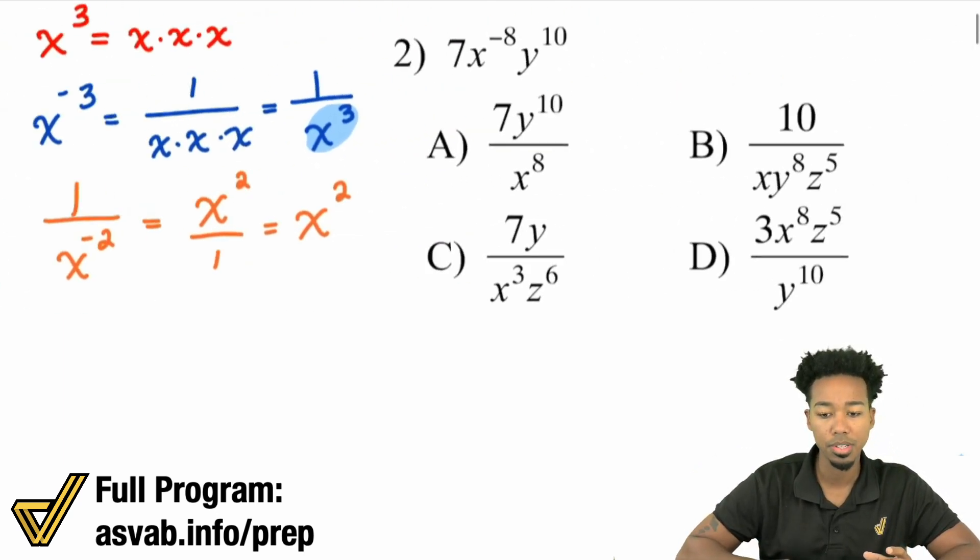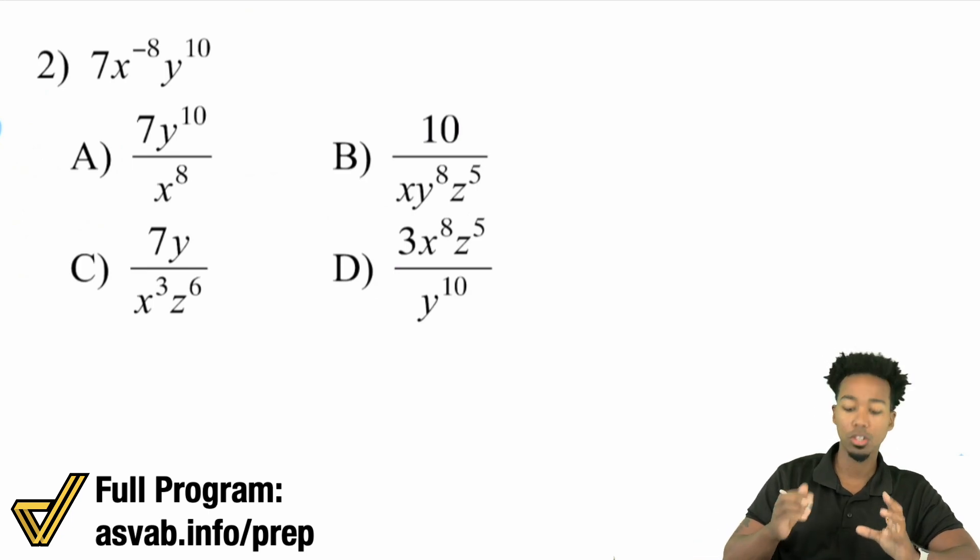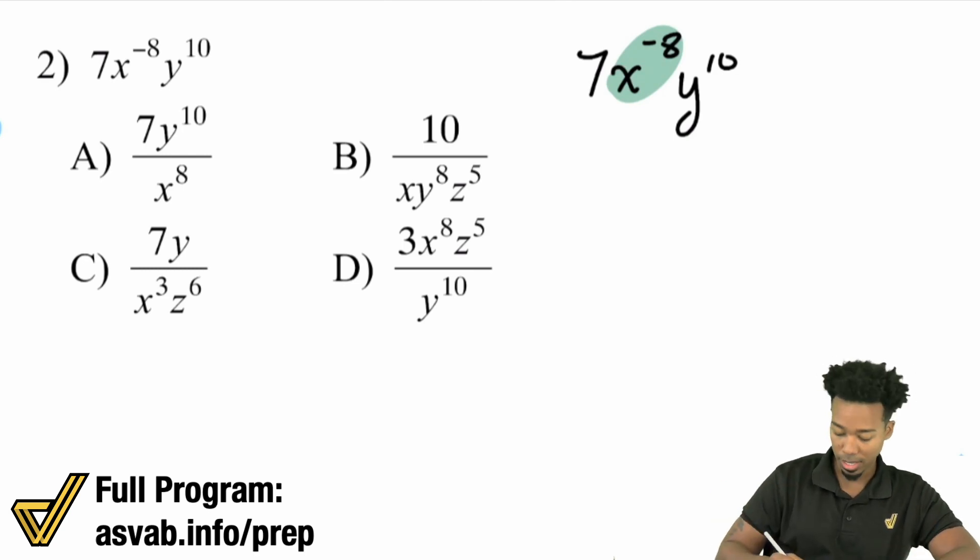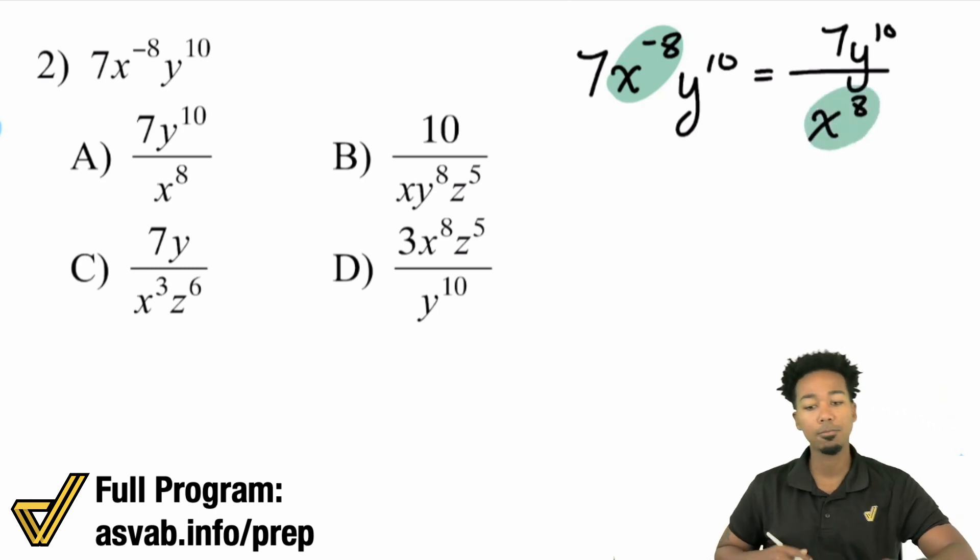So watch as we go through these different examples here, it's not going to matter. It's really just focusing on the correct piece. Because if you take a look here, seven x to the power of negative eight, y to the power of 10, it is only the x to the power of negative eight that has a negative exponent. So with that said, you'll have yourself seven y to the 10th over x to the power of eight. It's only the negative piece that gets moved if you want to turn it positive. That is it.